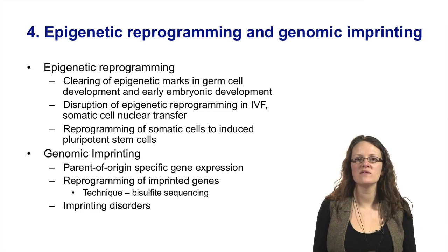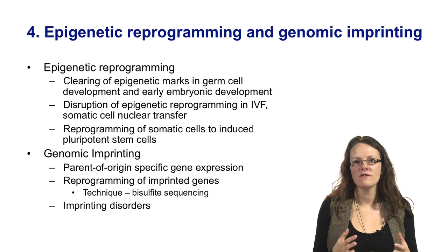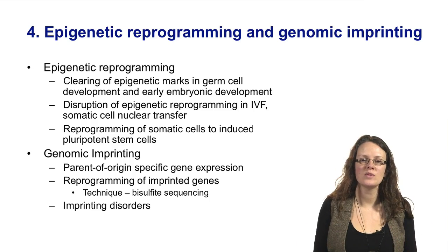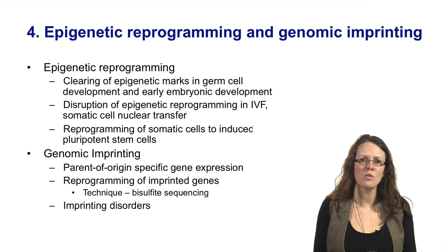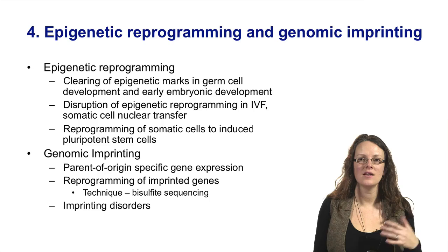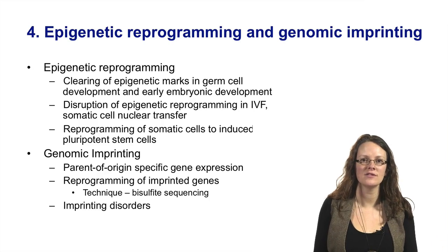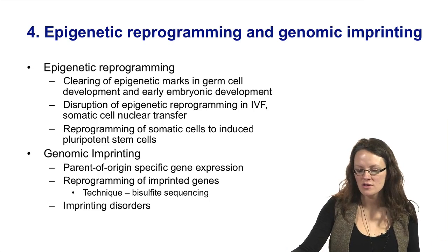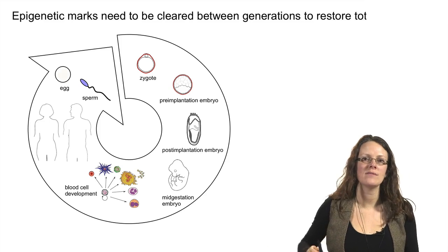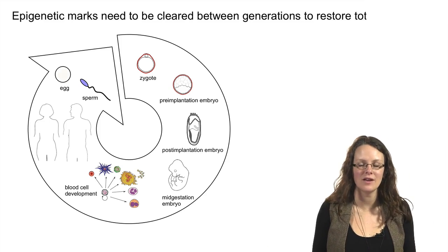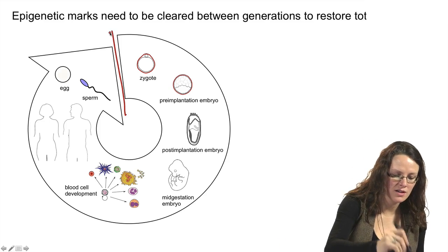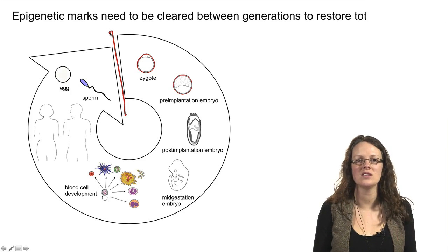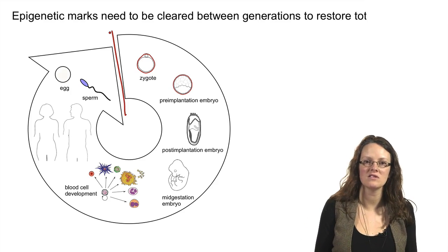You'll remember that what I've said is that we have generalised reprogramming between generations, and this is to wipe off the marks that have been laid down in one lifetime in the somatic cells, and ensure that in subsequent generations you will have totipotency. This cycle of life, with the break between the generations shown here, is trying to depict that we need to undergo reprogramming during this period.